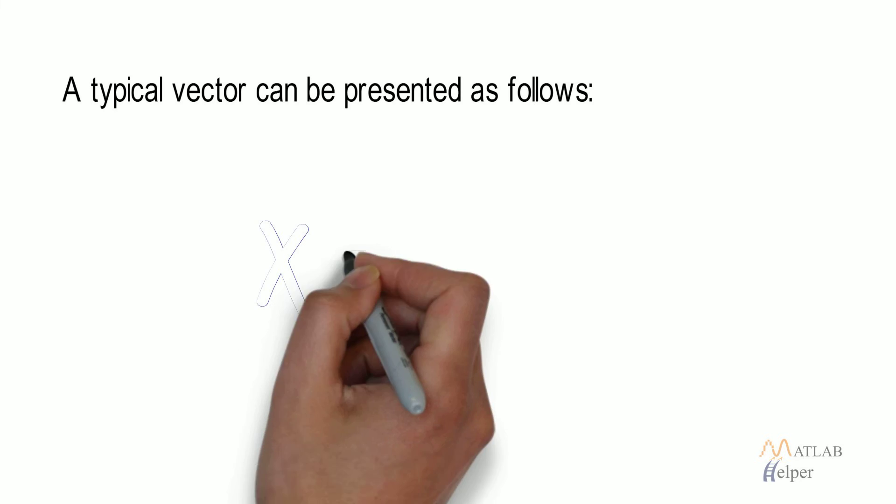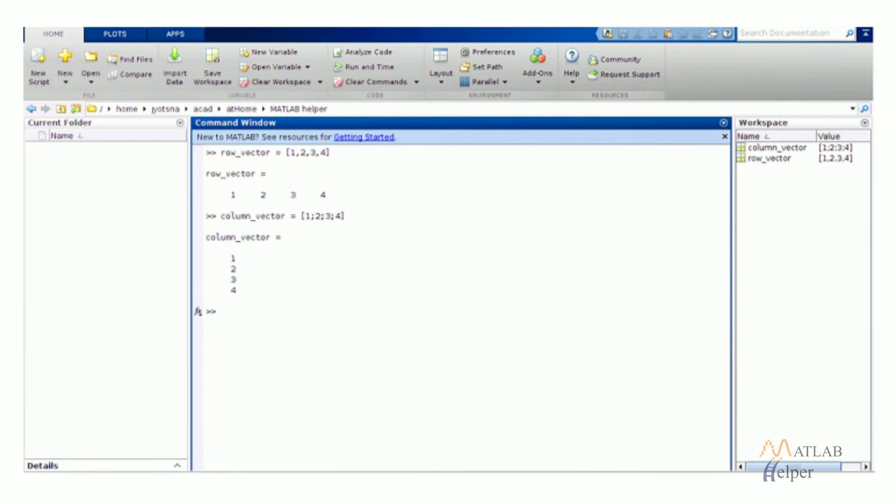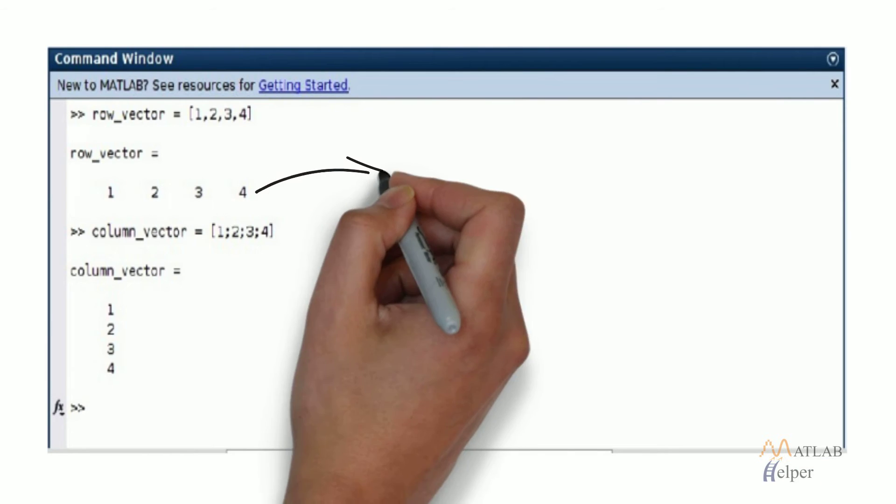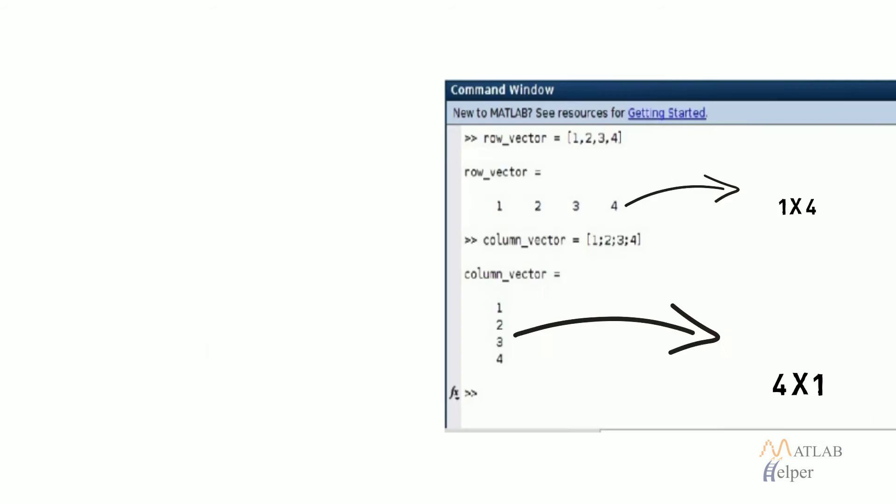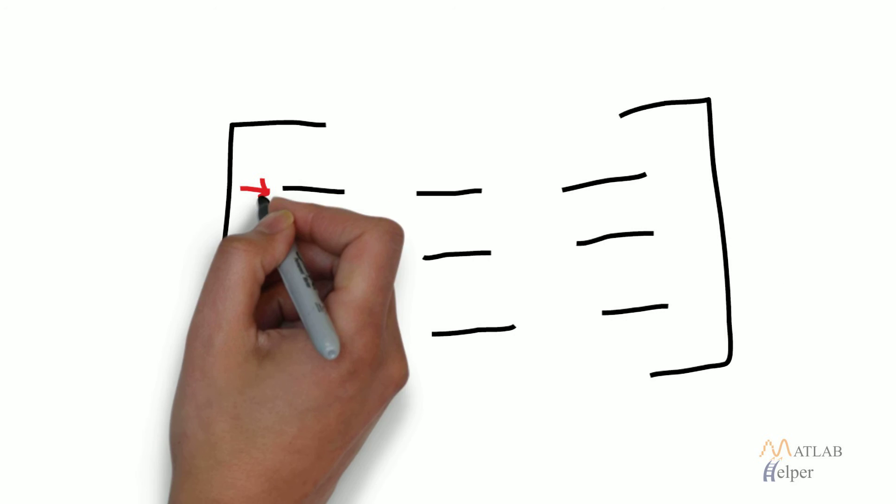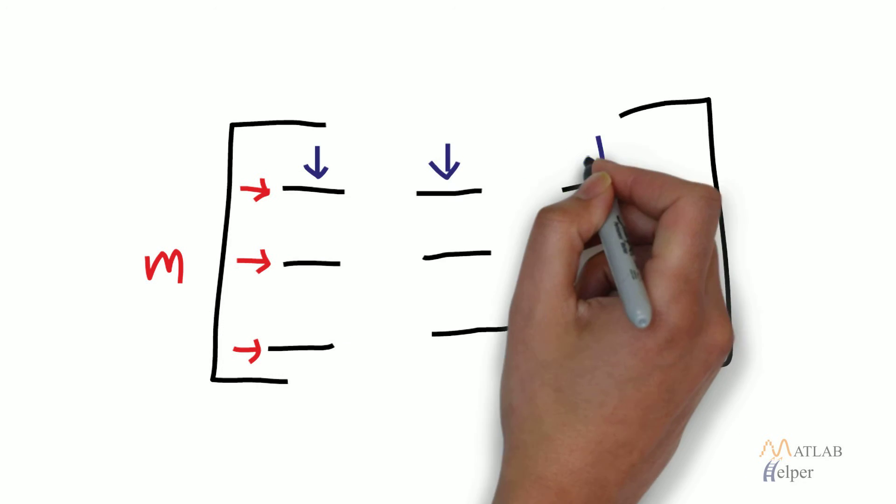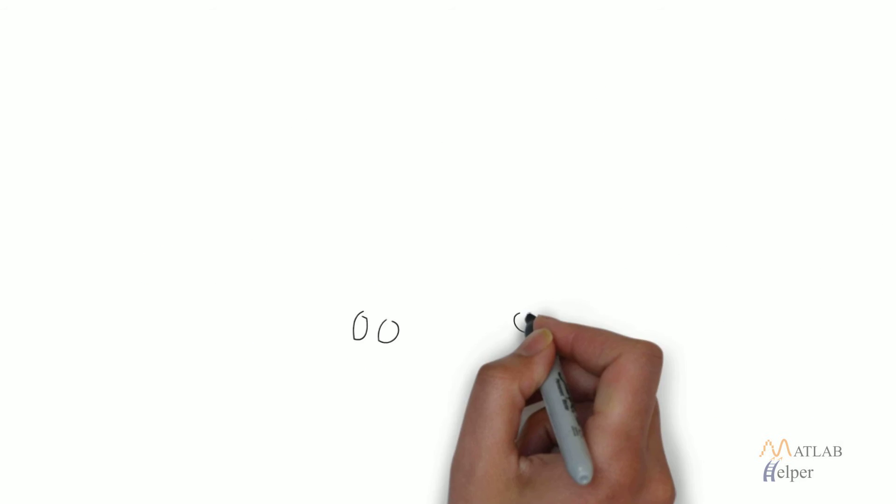A typical vector can be represented as given. The image shows you how to create a row vector and a column vector respectively. The size of these vectors will be known as 1 into 4 and 4 into 1 vectors. The convention of describing the size of an array is generally m into n, where m refers to the number of rows and n refers to the number of columns.